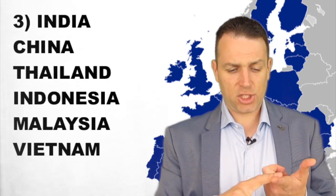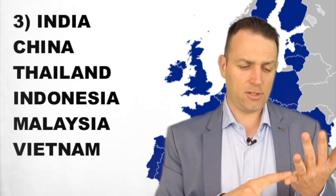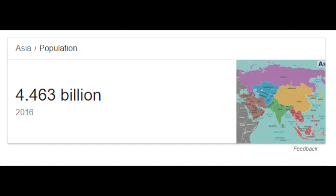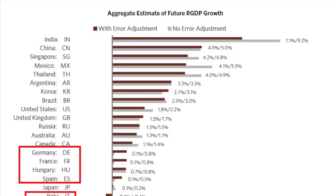Number three: India, China, Thailand, Vietnam, Indonesia, Malaysia. Asia's population is 4.46 billion people. If we go back to Dalio's table, look at the top — India, China, Singapore, Mexico, Thailand, Argentina, Korea, and many countries he didn't include, as they only looked at 12 to 20 countries. Diversify there: 4.4 billion people, growing economies. There will always be issues, but how will this look in 20 years? And how will Europe look in 20 years?